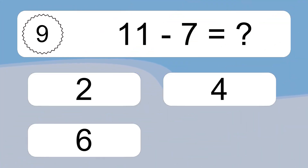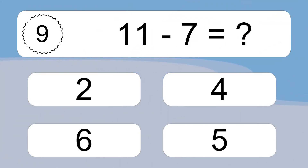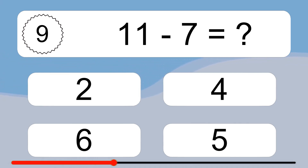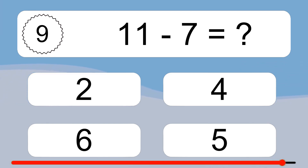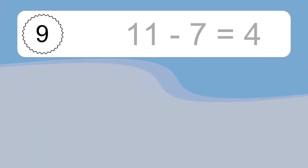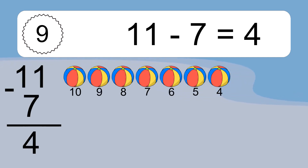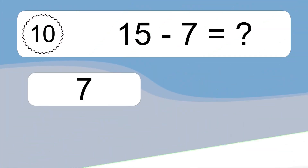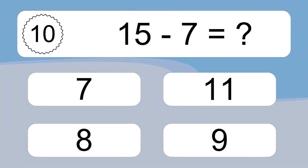11 minus 7 equals what? 11 minus 7 equals 4. Let's count it: 10, 9, 8, 7, 6, 5, 4.